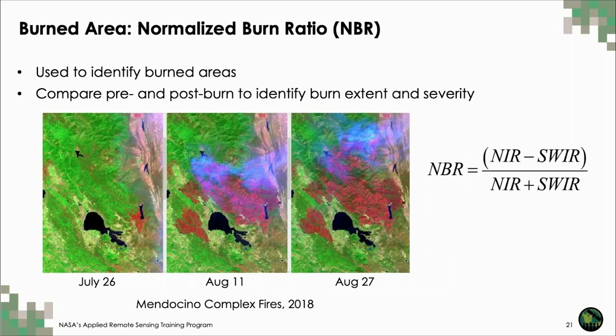To take advantage of the difference in spectral response between healthy vegetation and burned area, we use the Normalized Burn Ratio, or NBR, to map post-fire conditions. NBR uses remote sensing data at the near-infrared and shortwave infrared to map burned areas and assess burn severity. Similar to NDVI, NBR is a unitless value from negative one to one. A higher NBR value closer to one indicates healthy vegetation, while a low value closer to negative one indicates recently burned areas and bare ground.